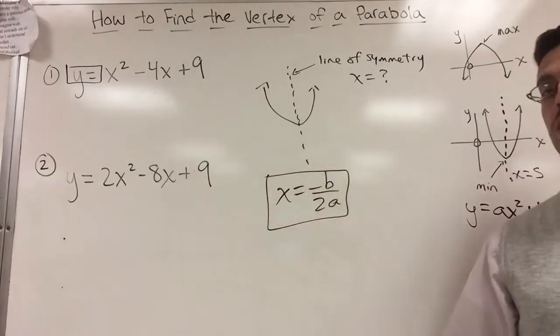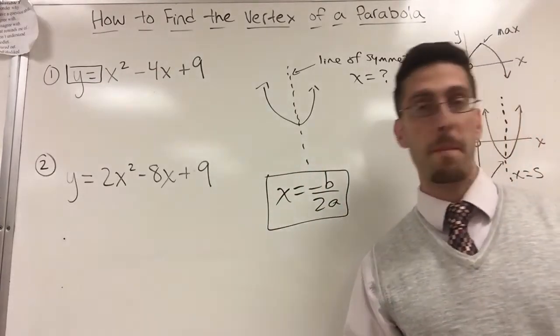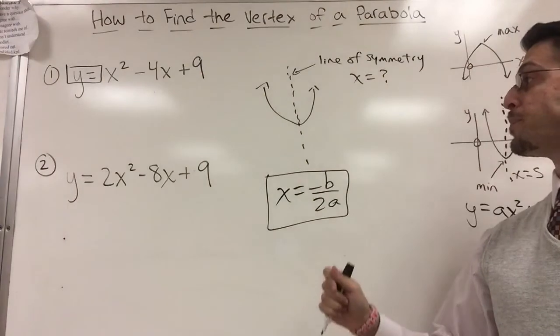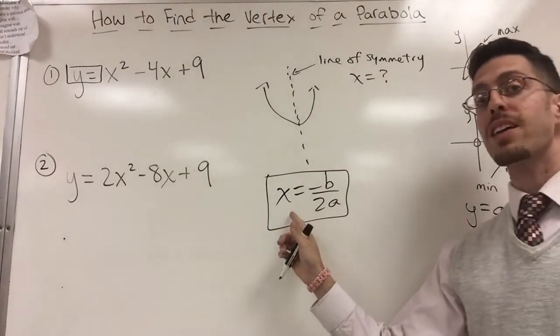X equals negative b over 2a. So that is what your something is. So this formula is very very important. Write it down. Learn it. Love it. Memorize it. That's gonna give me my x value.